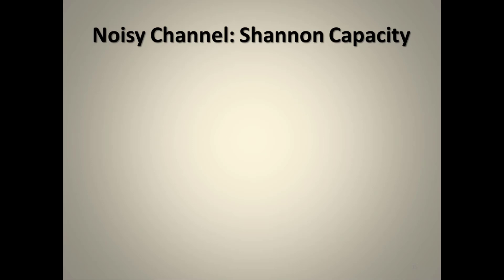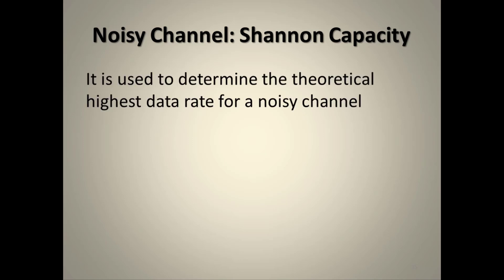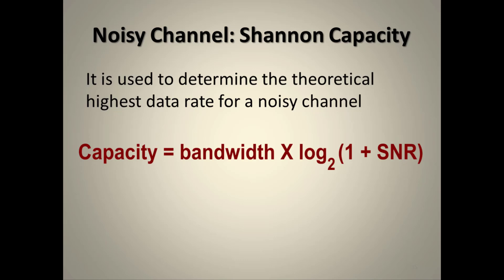Since noiseless channels don't exist in practice, the Shannon Capacity formula is used for noisy channels: Capacity = Bandwidth × log₂(1 + SNR). The Nyquist formula does not account for noise, but Shannon's formula does, giving the highest data rate that a noisy channel can support.